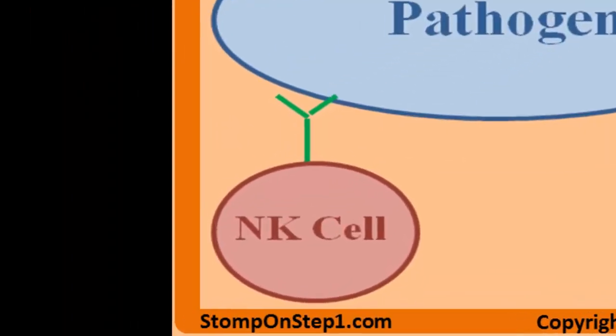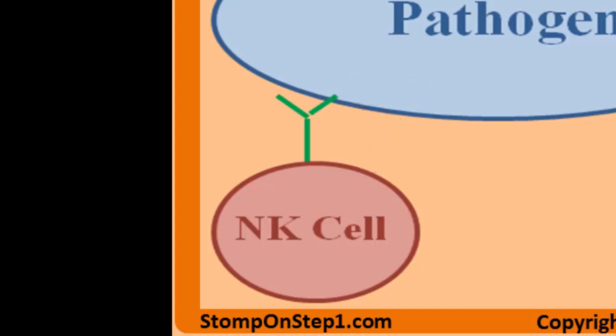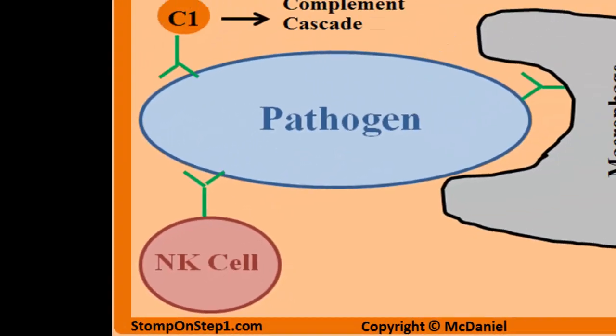Here the variable region is binding to the pathogen while the constant region interacts with NK cells. When NK cells become aware of the pathogen's presence, they can cause direct damage to the pathogen via the release of perforins and granzymes. This is called antibody-dependent cell-mediated cytotoxicity.